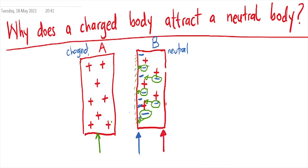This side has an excess of positives while this side has an excess of negatives. In other words, this neutral body now becomes polarized because we've brought a charged body near it. And since unlike charges attract, that explains why the attraction happens. Let me write this explanation briefly.